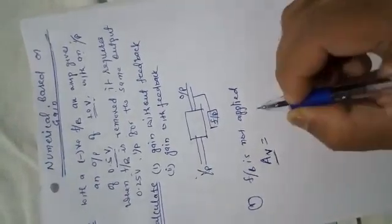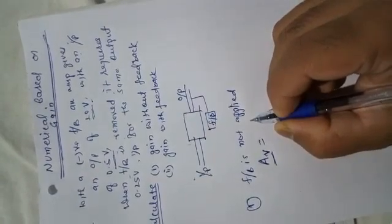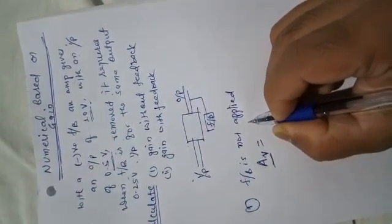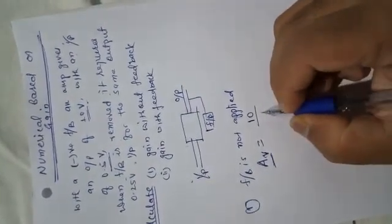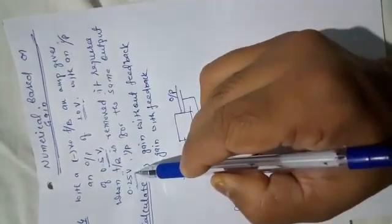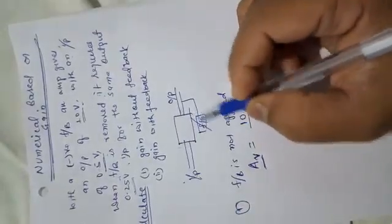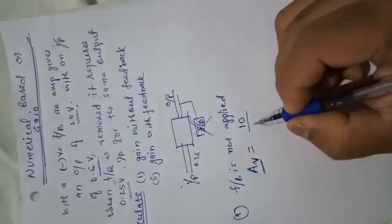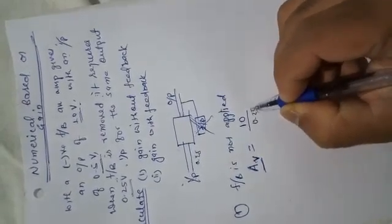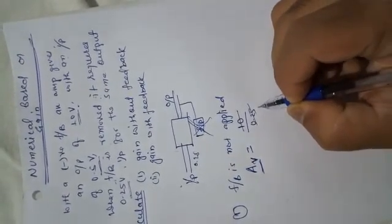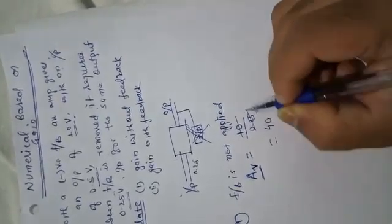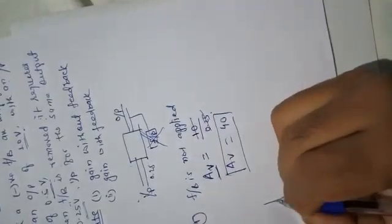Av equals output 10 volts divided by input 0.25 volts when feedback is removed. So 10 divided by 0.25 gives us 40. The gain without feedback is 40.